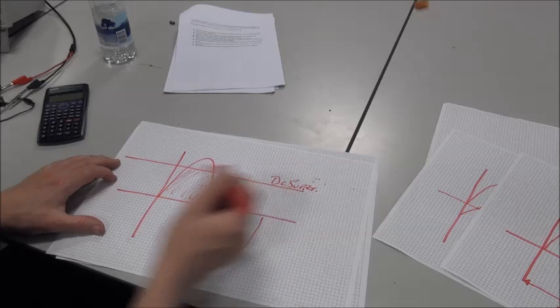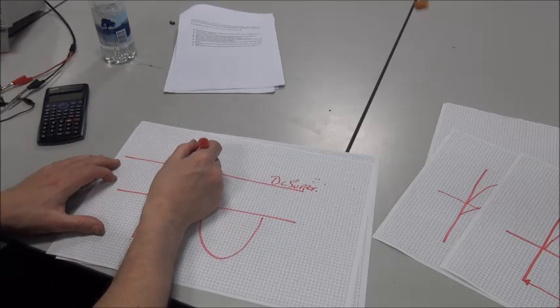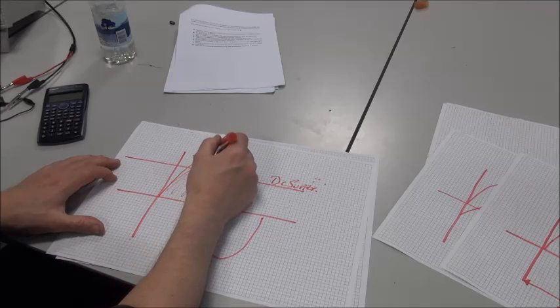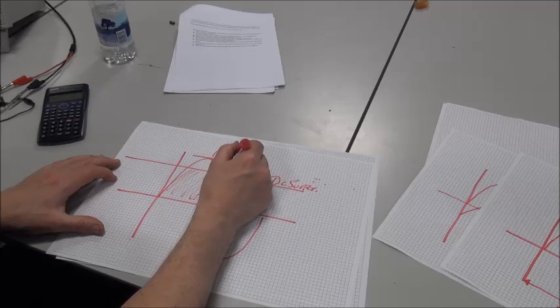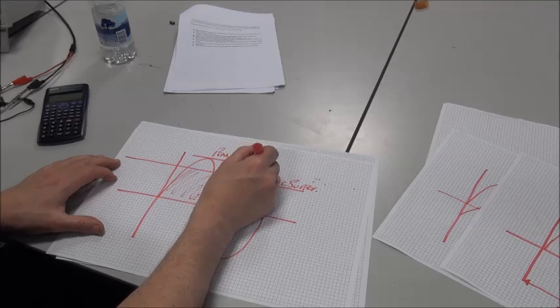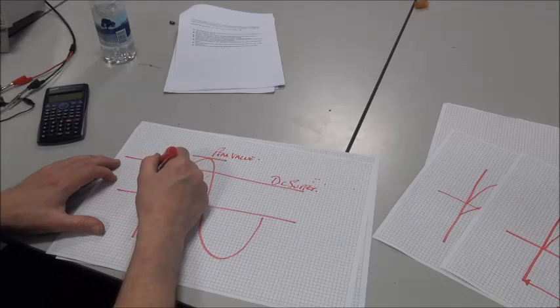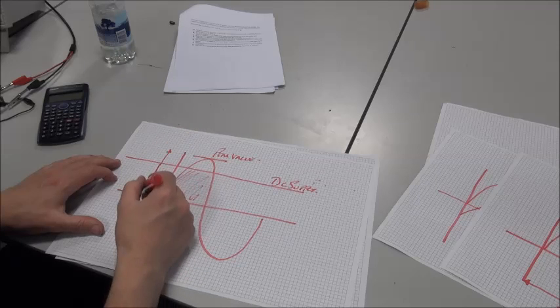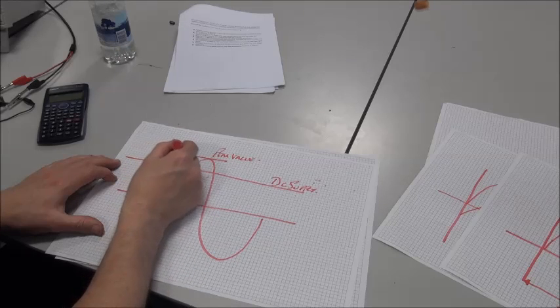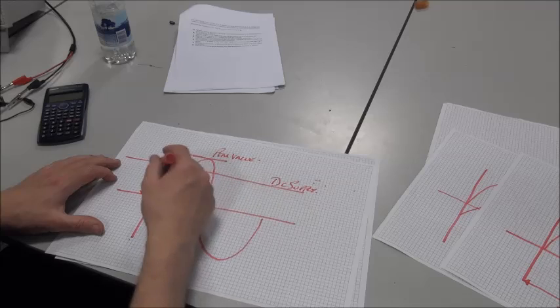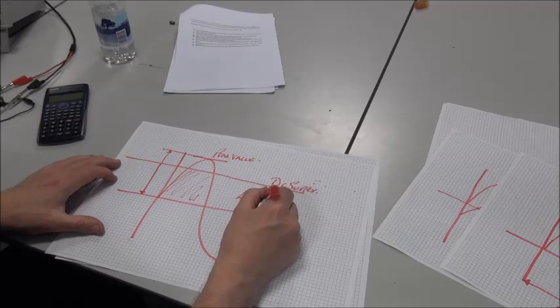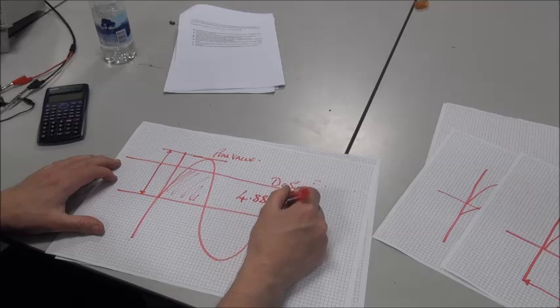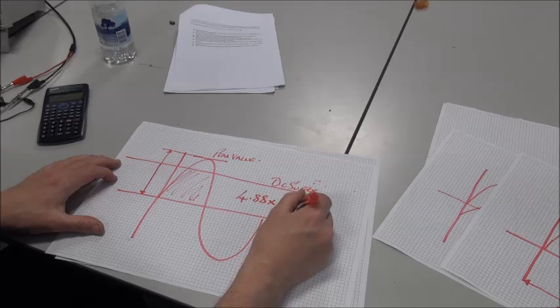It's the same formula for any sine wave. We take the peak value, or the amplitude, if that's what you want to call it. That's the bit between there and there, which for our circuit was 4.88 volts. And we multiply it by 0.707.